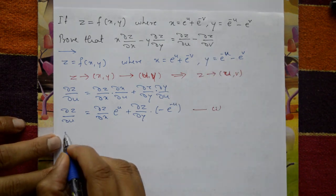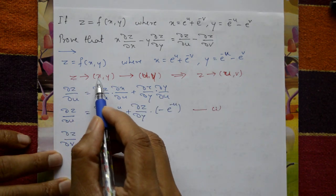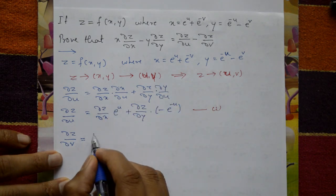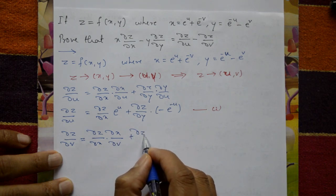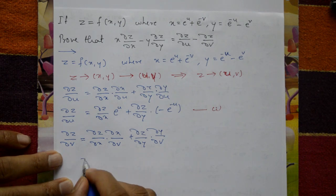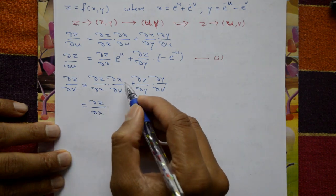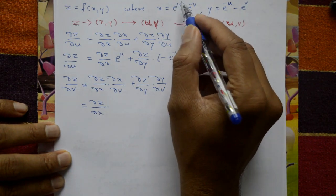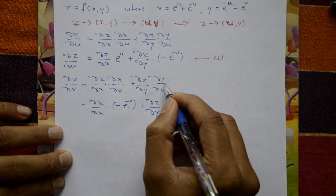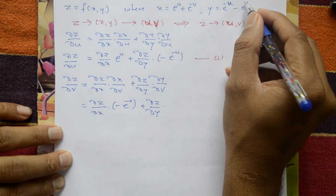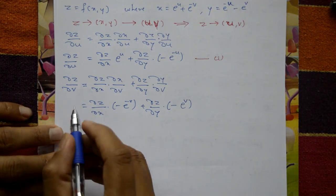dou z by dou v equals dou z by dou x into dou x by dou v plus dou z by dou y into dou y by dou v. dou z by dou x as it is, differentiation of x with respect to v with u treated as constant gives minus e raised to minus v. Plus dou z by dou y, and differentiation of y with respect to v gives minus e raised to v. This is equation number 2.